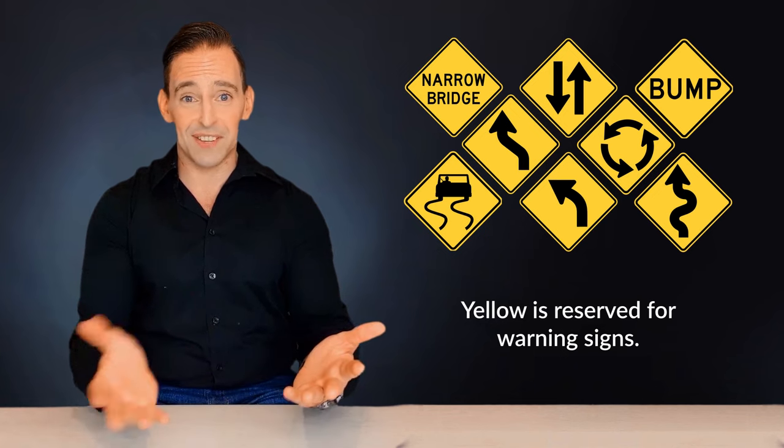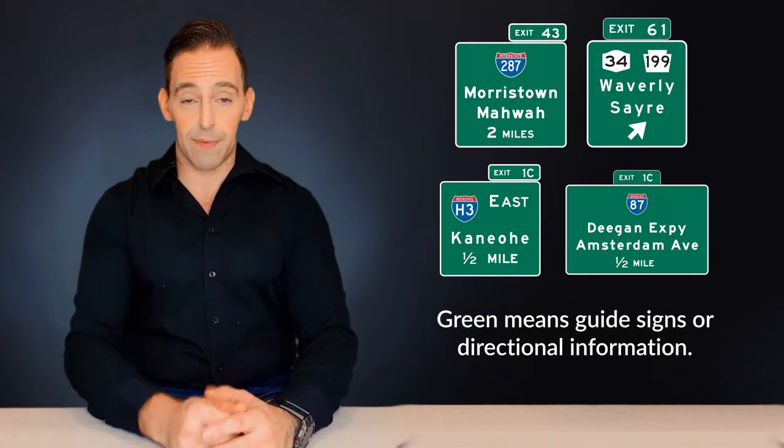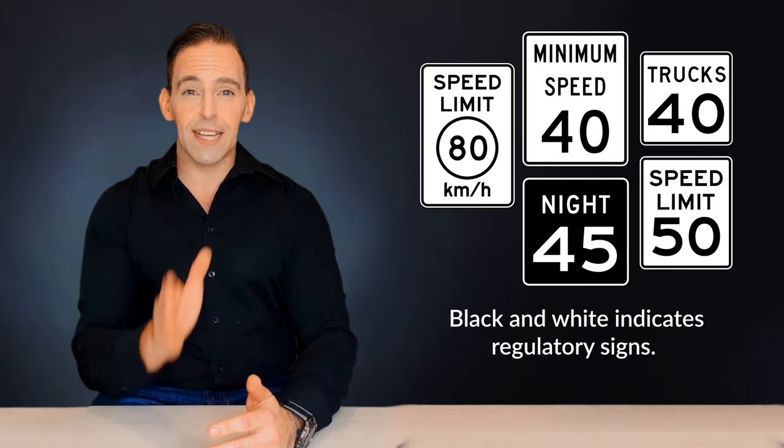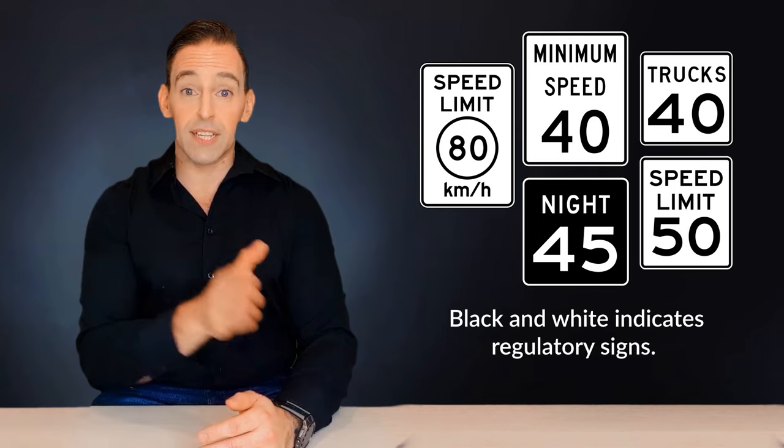What are the other colors? Well, green means guide signs or directional information. Yellow warns of hazards ahead. Black and white indicates regulatory signs. These are signs that tell you what you must and must not do.